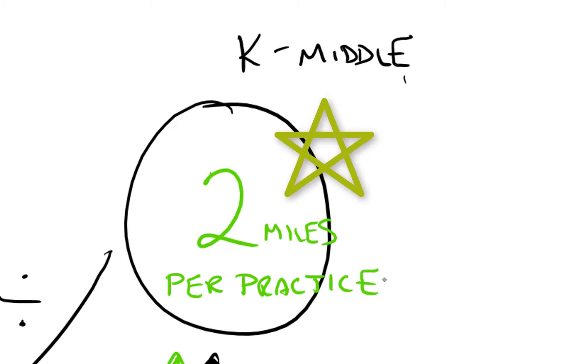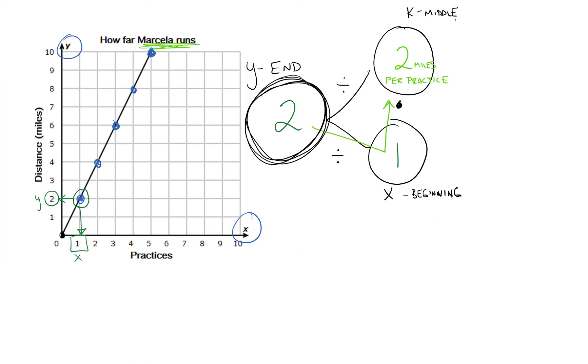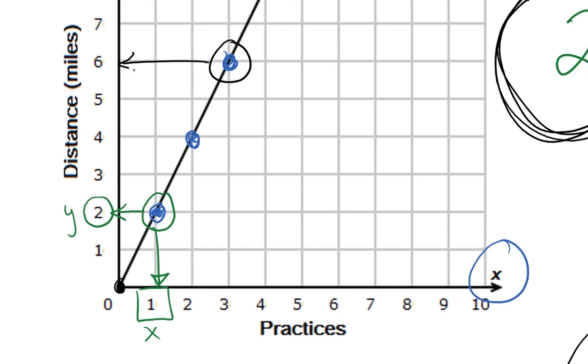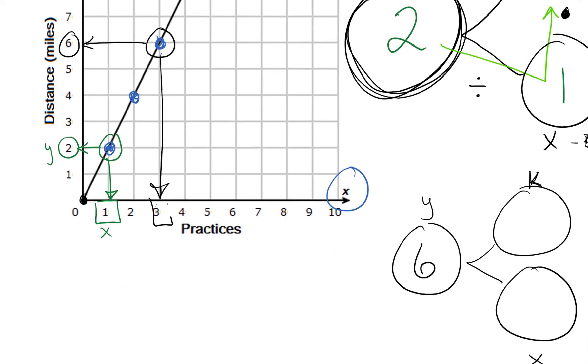Now what if I picked a different point? Let me set up another one and see what happens. Our beginning, our middle, and our end. If I pick one that's way up here, let's see what the y value that's associated with it, which is 6, and the x value which is 3.